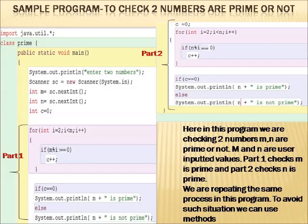So what you can see is that we are repeating the same process in the program. In part 1 and part 2 we are doing the same thing. That means we are repeating the same process. So now we are going to discuss how we can include the concept of methods to overcome this.